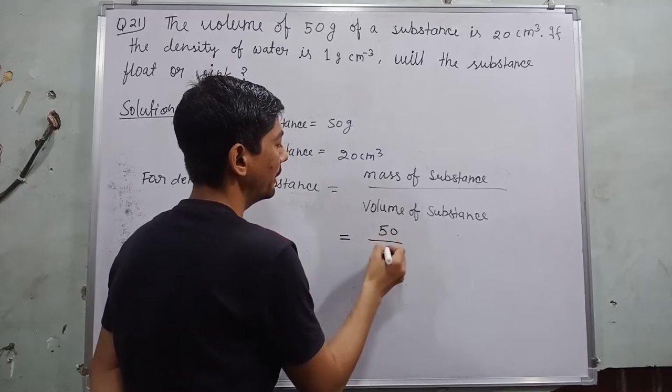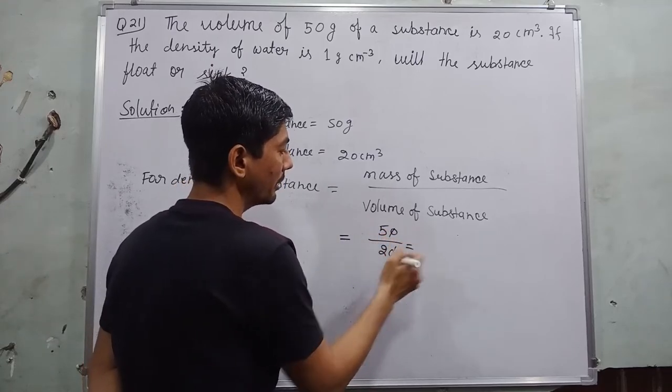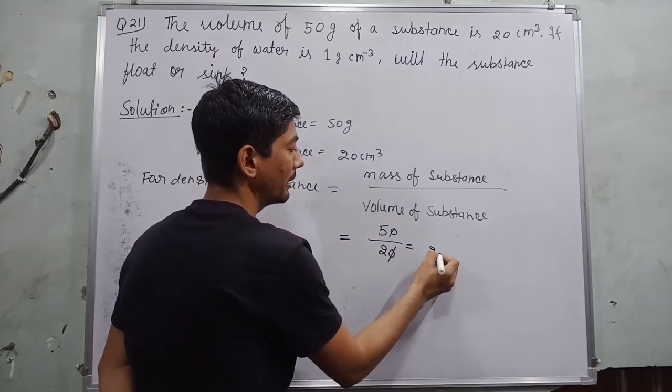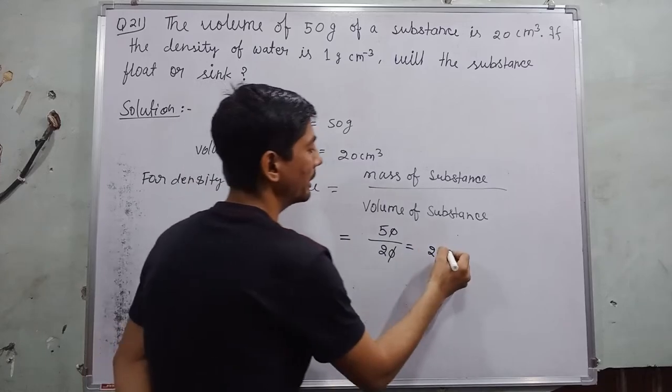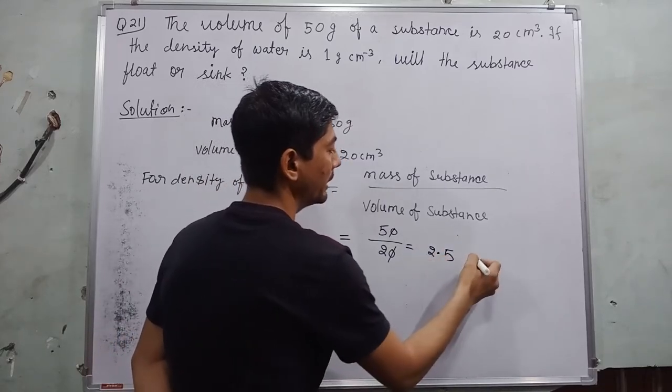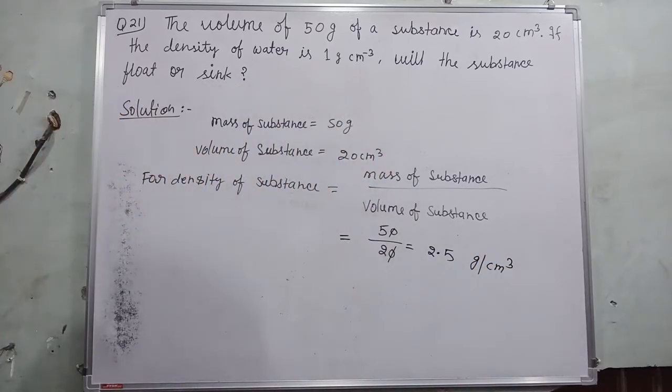Substituting values: mass is 50 grams and volume is 20 centimeter cube. So zero cancel out when we divide by 2, 2 to the 4 remaining. Applying decimal becomes 10 to 5 to 10, so it will be 2.5 grams per centimeter cube.